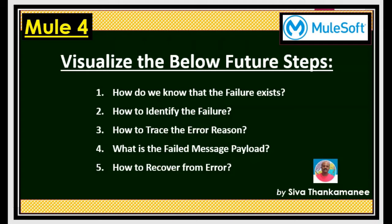The second is how to identify the failure. If you have a mechanism to know there is a failure, how do you identify it and what are the different mechanisms to trace that failure? The third is to trace the error reason — you need to know the specific reason of the failure, because only if you know the reason will you be able to take corrective action. Number four is: what is the failed message payload? Sometimes we know all the errors but cannot trace the exact payload due to its absence, creating complexity for error recovery. And step number five is to visualize how we are going to recover from the error — we have the failure reason and the payload, so what do we do with that payload in order to recover from that particular error scenario?